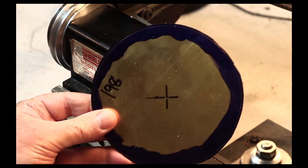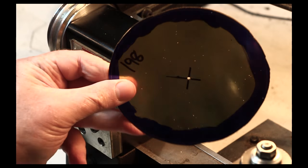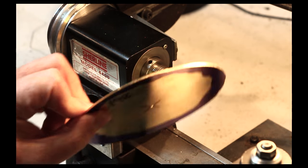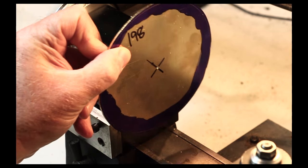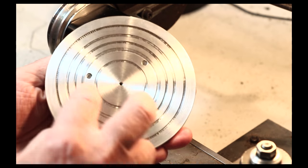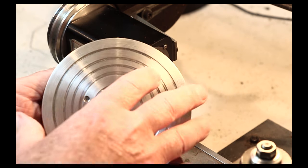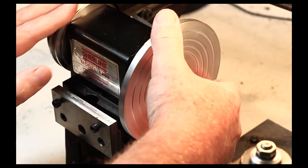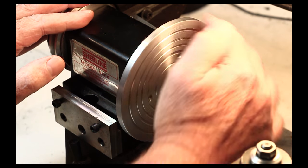The next step is to use the lathe to turn the rough blanks down to their final diameter. But the problem I always run into is how do you mount a thin disc to a lathe. Fortunately, Chris at Clickspring came up with this idea of making an arbor mounted to a faceplate.